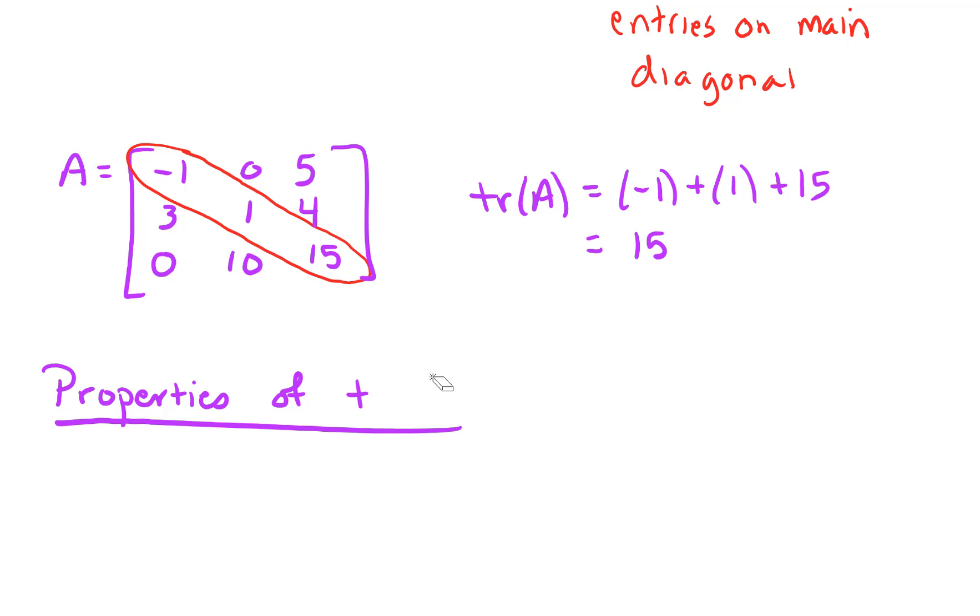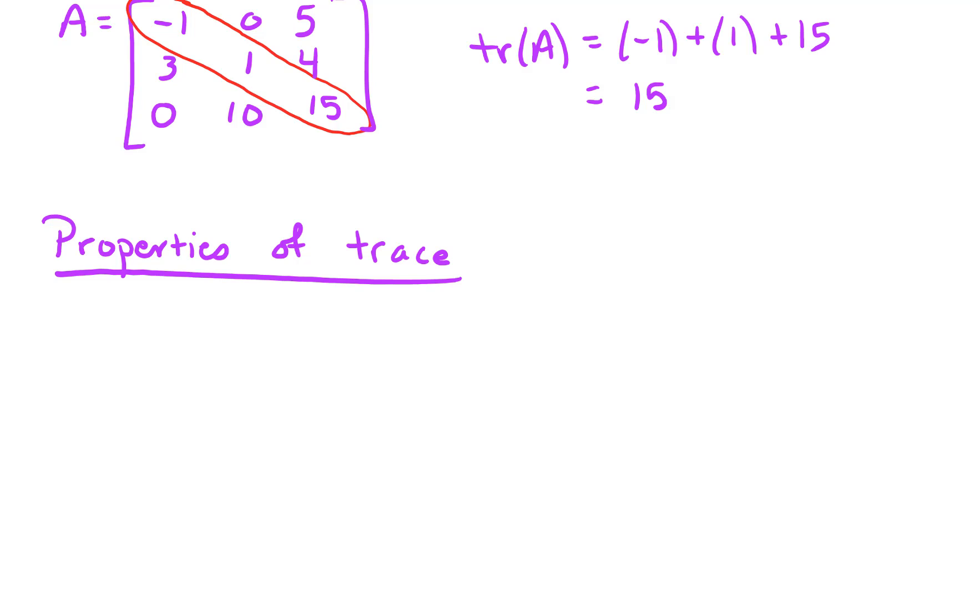So the first property is an additive property. In other words, the trace of A plus B is equal to the trace of A plus the trace of B.